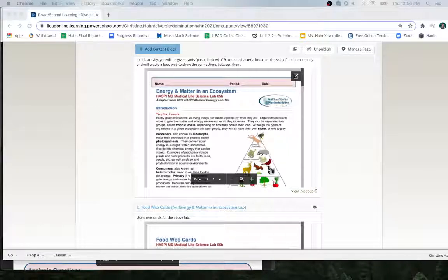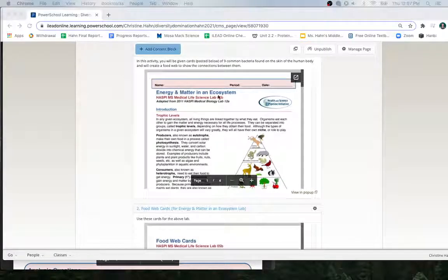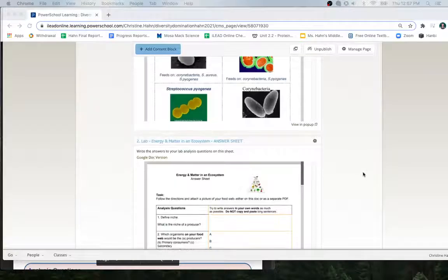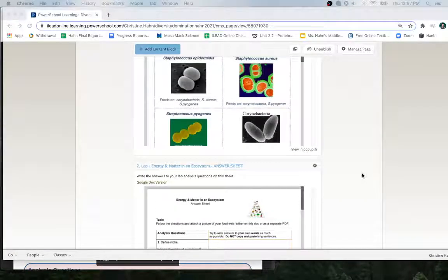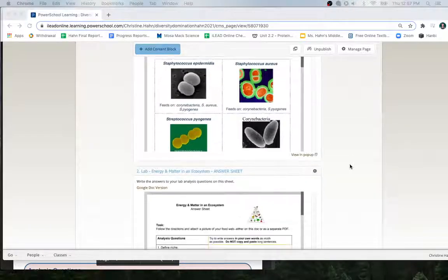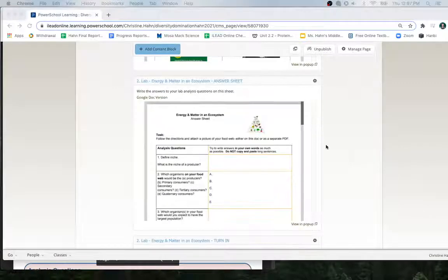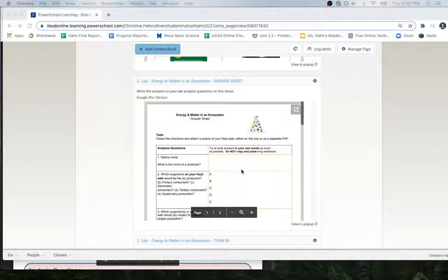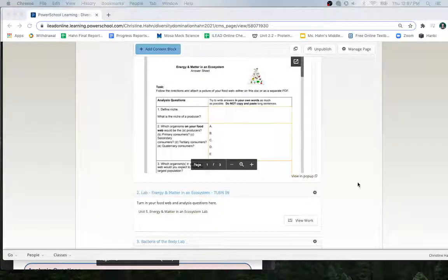Hello, we're going to go over the activity Energy and Matter in an Ecosystem. Here we have the lab, and here we have the food web cards that you need to print out. If you don't have a printer, you could screenshot them and organize them on a Google Slide. Here is the answer sheet that I want you to use to write your analysis questions, and here's where you're going to turn it in.